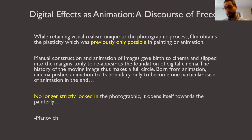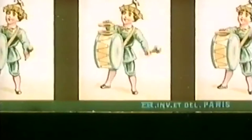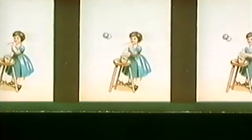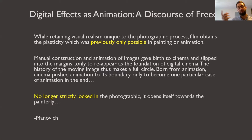If we give a long history of cinema — that is, the moving image — and we count pre-cinematic toys like the phenakistoscope, those things are not photographic. They are pre-cinematic because they create moving images but don't use photographic images; they use any kind of drawing to create the illusion of movement, like different forms of a flip book. Manovich says: the history of the moving image makes a full circle. Born from animation, cinema pushed animation to its boundary, only to become one particular case of animation in the end. No longer strictly locked in the photographic, it opens itself toward the painterly.